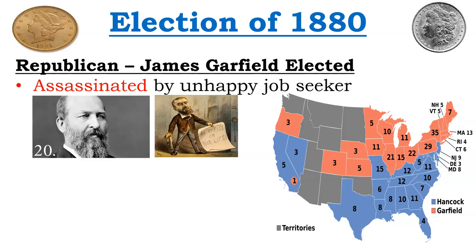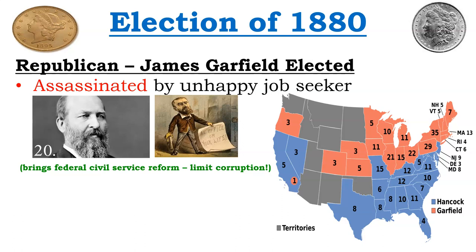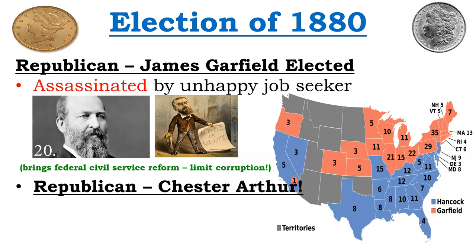The election of 1880 saw Republican James Garfield elected. He was assassinated almost immediately by an unhappy job seeker — this was the time of the spoils system, going back to Andrew Jackson, where if you helped somebody win political office, you were rewarded with a job even if you didn't know how to do it. This brings about civil service reform and actually having qualifications for a federal job.